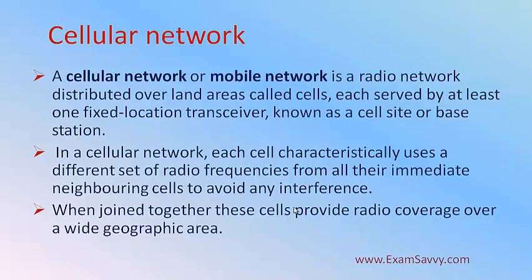Each cell in the cellular network uses a set of radio frequencies for immediate transfer to neighboring networks nearby, in order to avoid interference and noise. Each cell maintains its own set of frequencies to avoid noise. When neighboring cells are joined together, the radio coverage becomes a wide geographic area — the coverage will be wide.